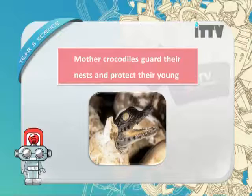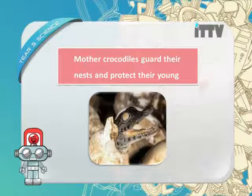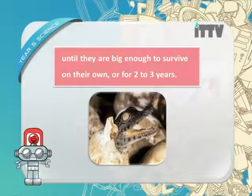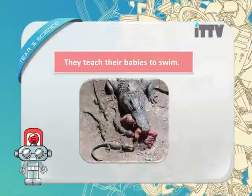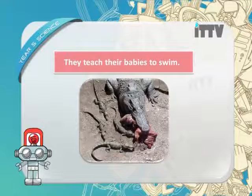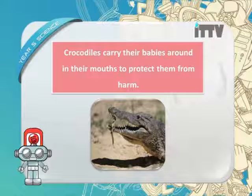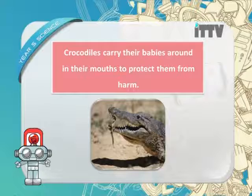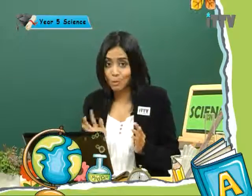Mother crocodiles guard their nest and protect their young until they are big enough to survive on their own — for two to three years. They teach their babies to swim. Crocodiles carry their babies around in their mouths to protect them from harm. This is the main way crocodiles protect their young, even though they have a brain the size of a cigar.